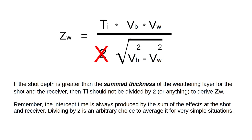Remember, the intercept time is always produced by the sum of the effects of the shot and receiver. Dividing by two is an arbitrary choice to average it for very simple situations.